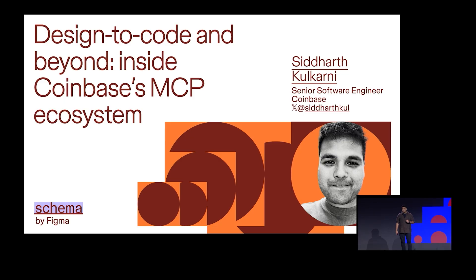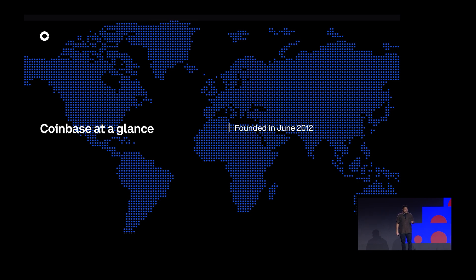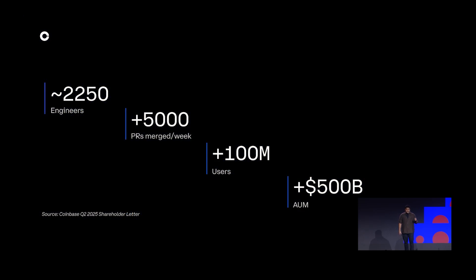But first, some context. Coinbase was founded in 2012 and is the most trusted place for people and businesses to buy, sell, and use crypto. We have around 5,000 employees, half of which are engineers, and these engineers are merging a staggering 5,000 PRs a week. Ultimately, all of this code is reaching over 100 million users across the US and worldwide, with over $500 billion of assets under management.